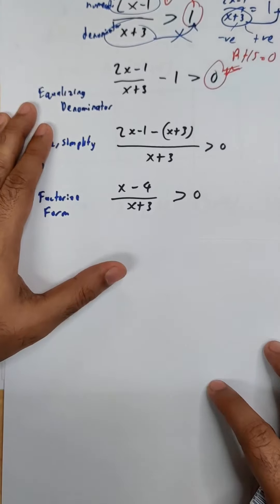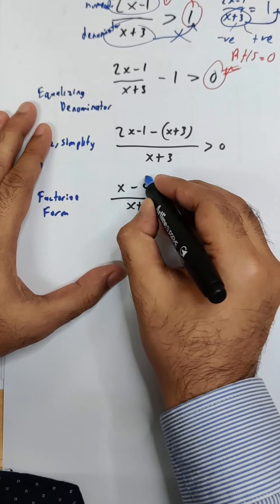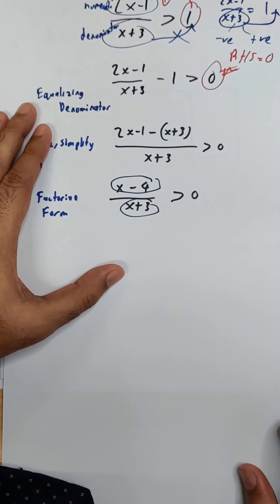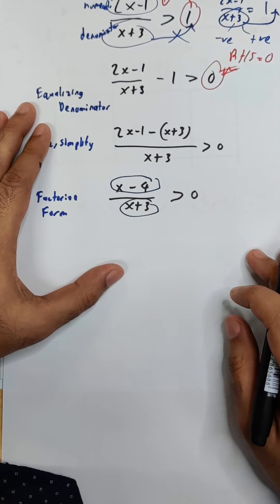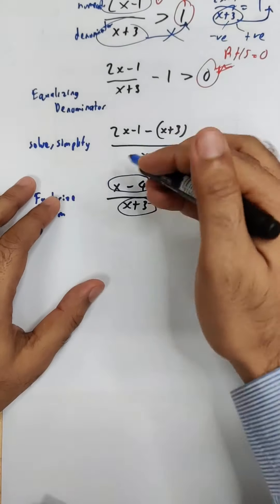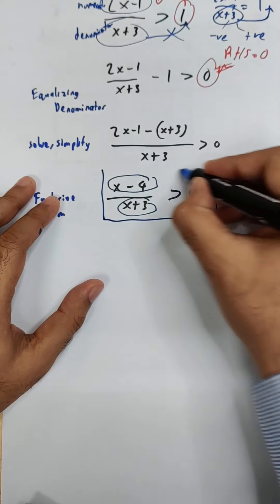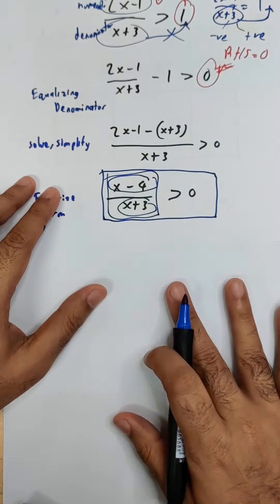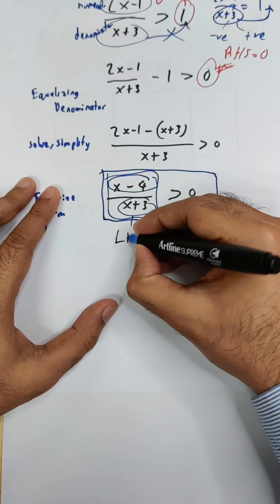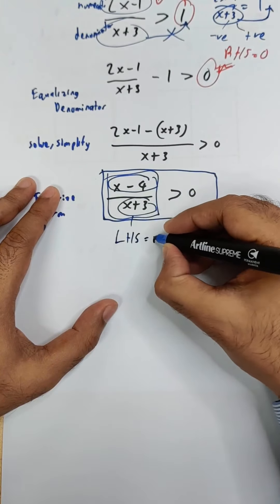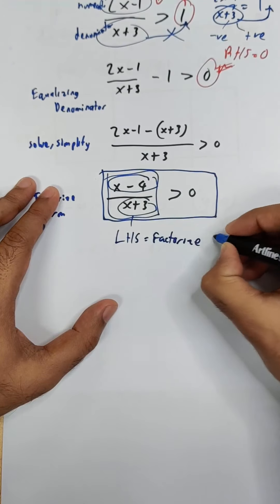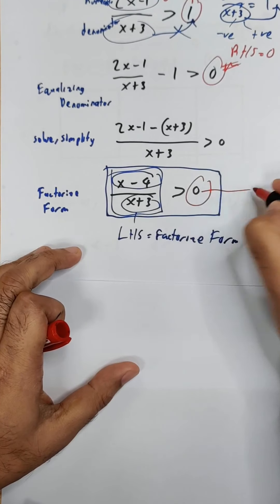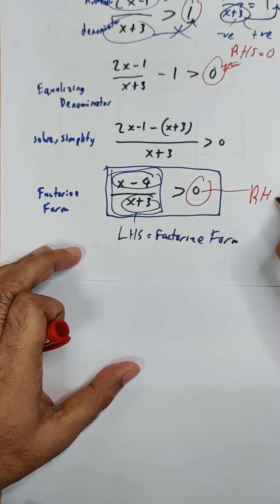After simplifying, you get yourself into what I call a factorized form. You can see x minus 4 and x plus 3 are already in factorized form. What you want to achieve is: the left-hand side is in factorized form and the right-hand side equals zero. If you got here then you have reached your factorized form.